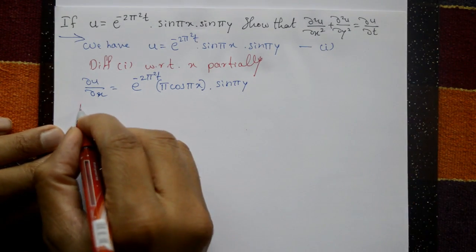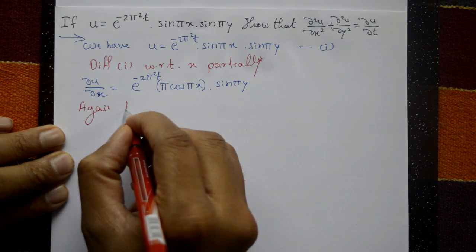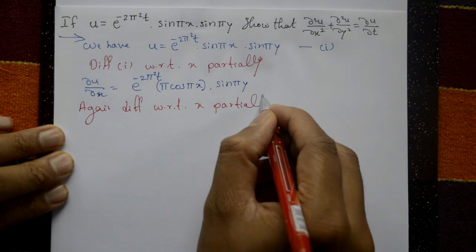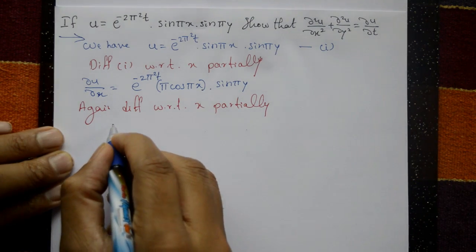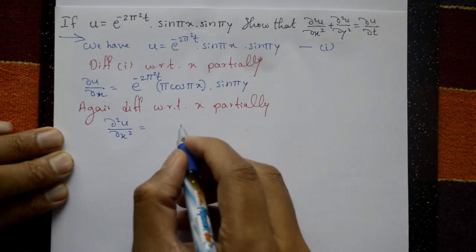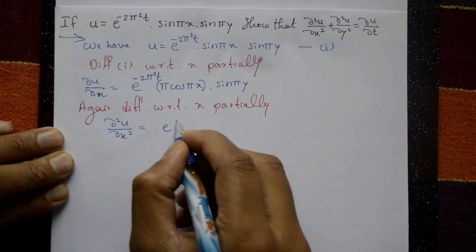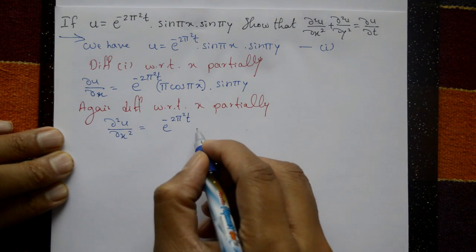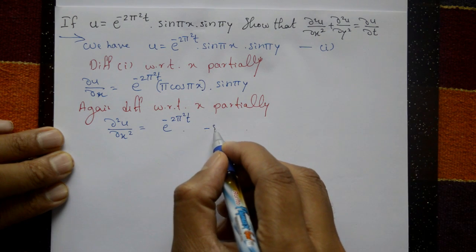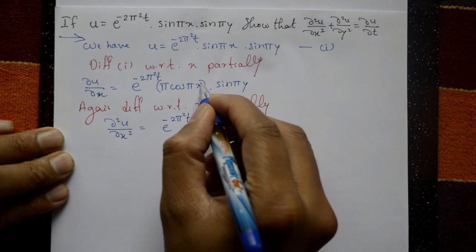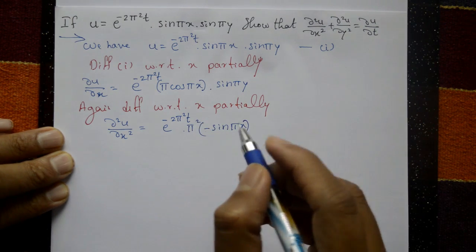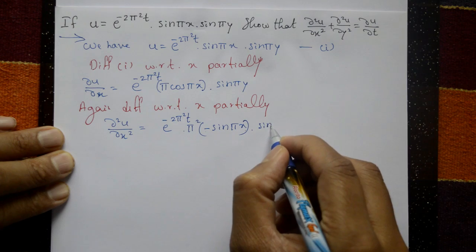Again differentiate with respect to x partially to get ∂²u/∂x². The first and last terms are constants as they are: e^(-2π²t). Differentiating cos(πx) gives minus sin(πx), multiplied by π again, giving π² total. sin(πy) is a constant as it is.